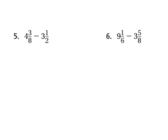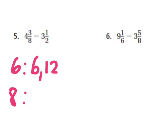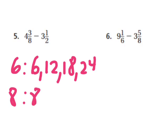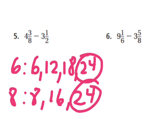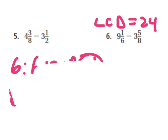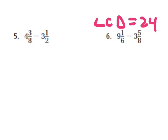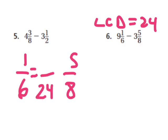I have nine and one sixth minus three and five eighths. I need to find a common denominator. The multiples of six are six, twelve, eighteen, twenty-four. The multiples of eight are eight, sixteen, twenty-four. They have twenty-four in common, so my least common denominator is twenty-four. Now I'm going to change my fractions — one sixth and five eighths — to fractions with twenty-four in the denominator.